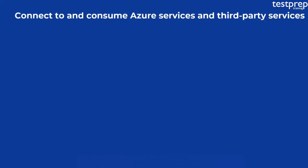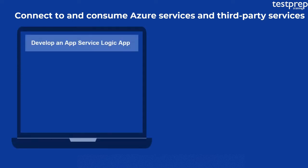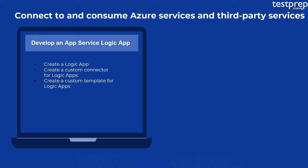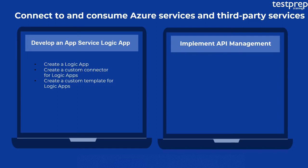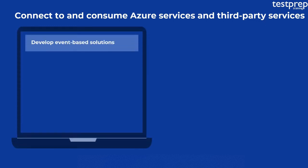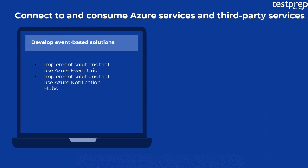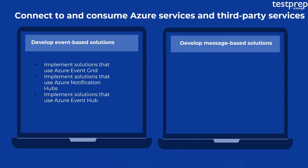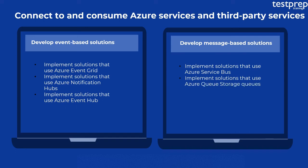Fifth, Connect to and Consume Azure Services and Third-Party Services. Number one: Develop an App Service Logic App — subtopics: create a logic app, create a custom connector for logic apps, create a custom template for logic apps. Number two: Implement API Management — subtopics: create an APIM instance, configure authentication for APIs, define policies for APIs. Number three: Develop event-based solutions — subtopics: implement solutions that use Azure Event Grid, Azure Notification Hubs, and Azure Event Hub. Number four: Develop message-based solutions — subtopics: implement solutions that use Azure Service Bus, and implement solutions that use Azure Queue Storage Queues.